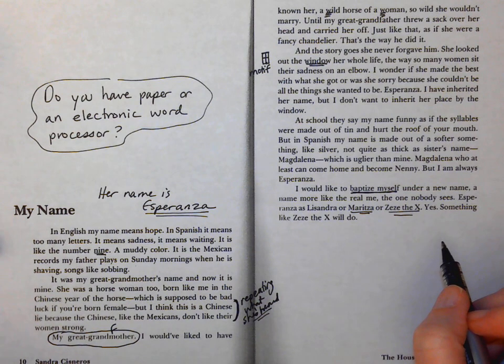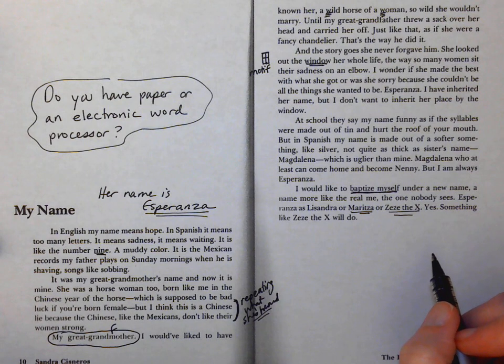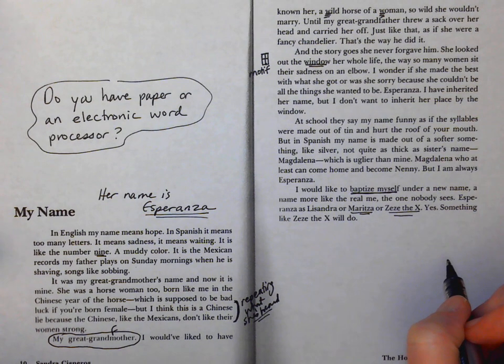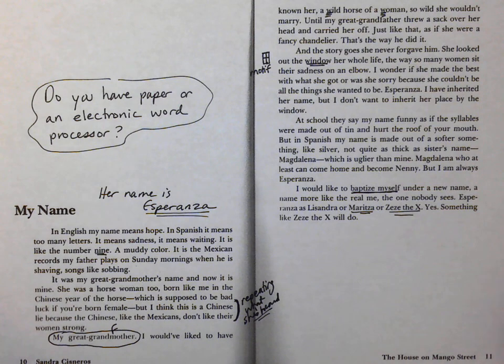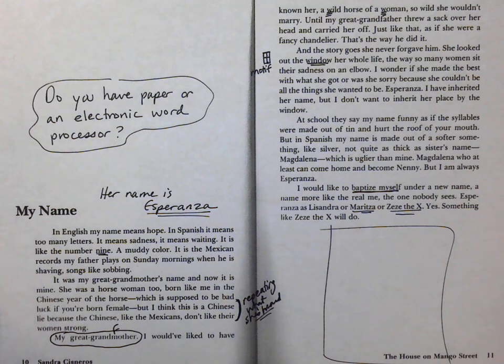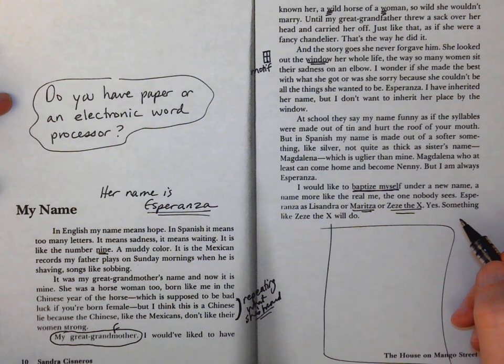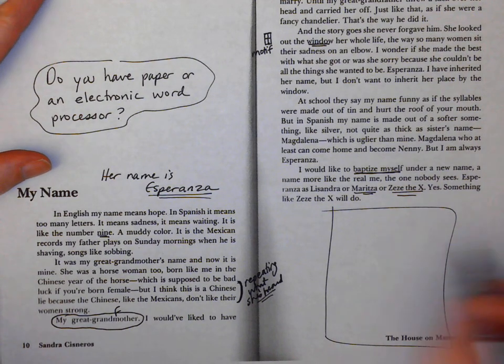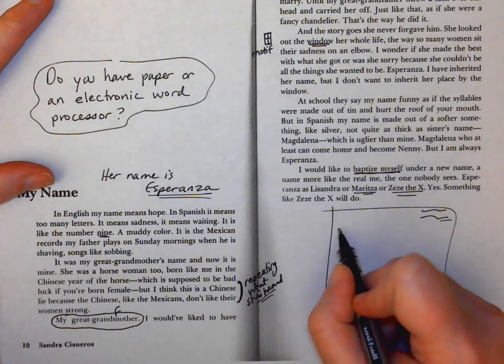If you are in regular English 10, sophomore core, you can stop the video right now and go on and answer the questions. If you're in sophomore honors, I want to show you how to model. You've come to the end of a vignette. What are you going to do for your reading log? What does that look like?